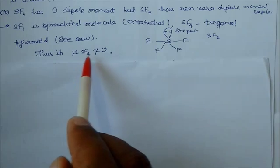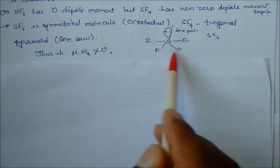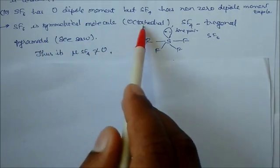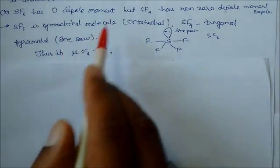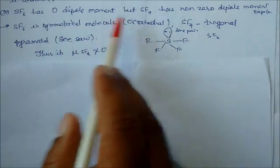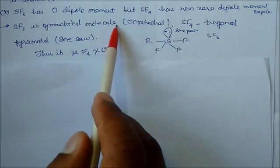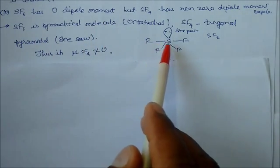In the see-saw shape, the dipole moment is not zero. In symmetrical molecules, all dipole moments cancel. SF6 has zero dipole due to octahedral symmetry, while SF4 does not have zero dipole moment.